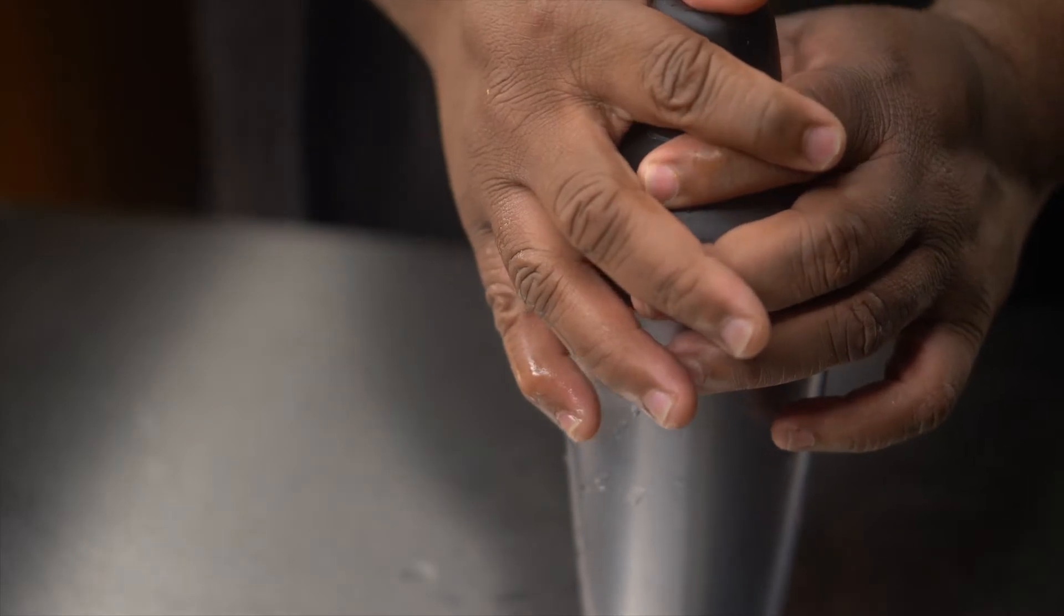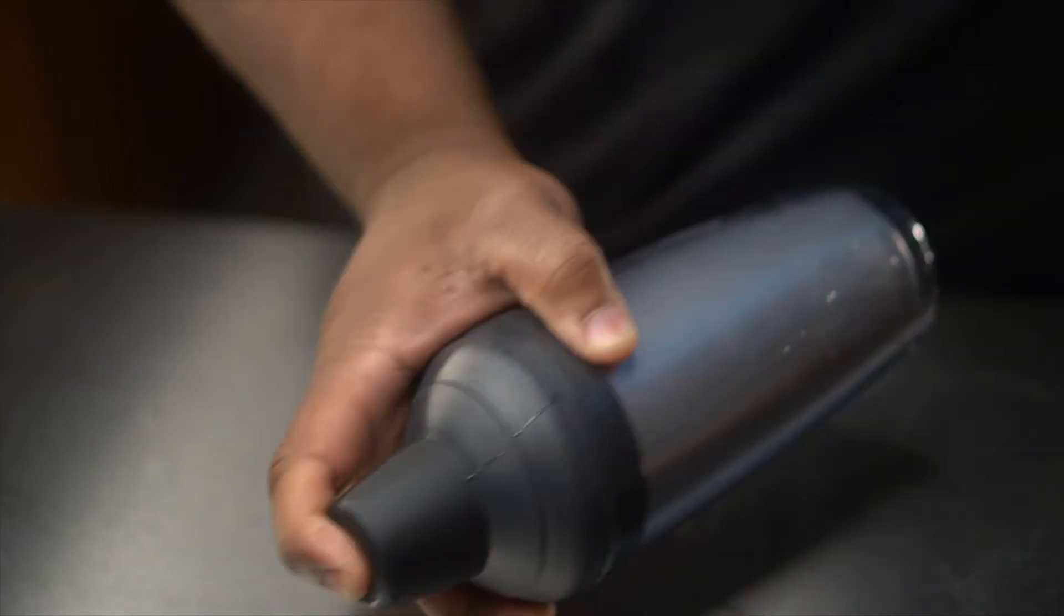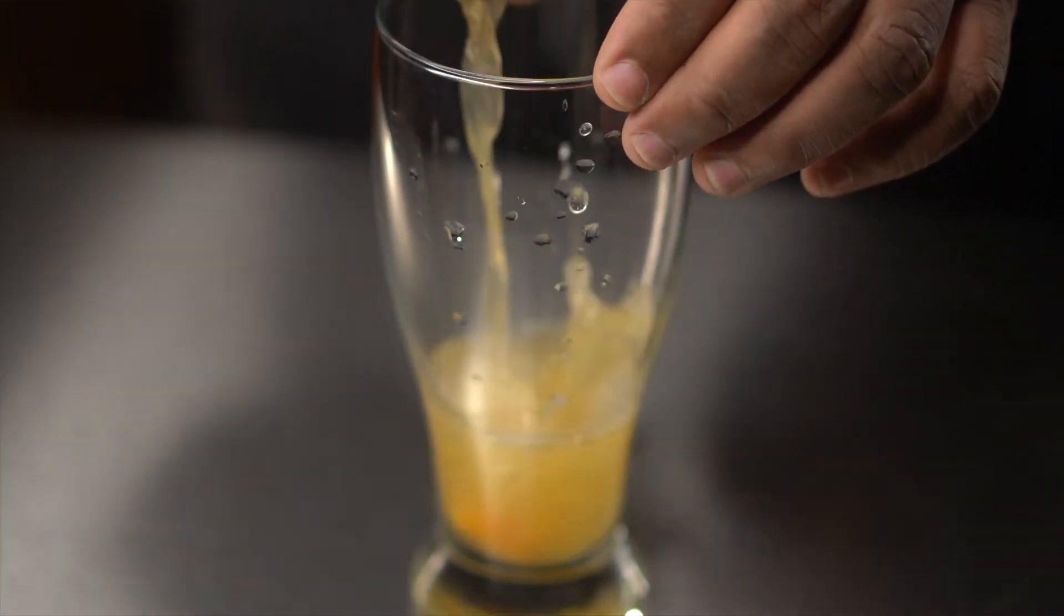And then we're going to top it off with a little more ice, pop our shaker top on, and then we're going to begin to shake this thing vigorously because we want to break up some of that kiwi and also we want to break up some of that mango. And once you shake it vigorously, we're going to pop it in our glass.